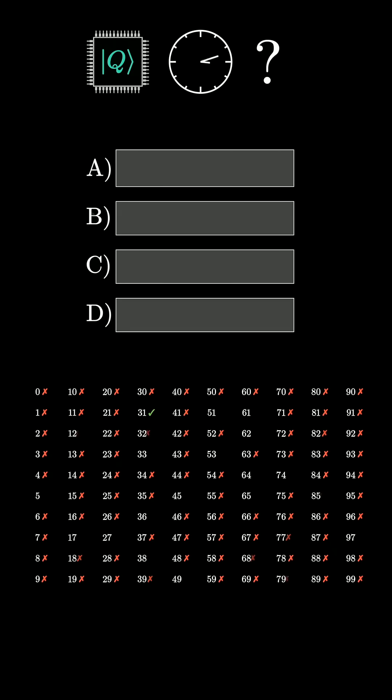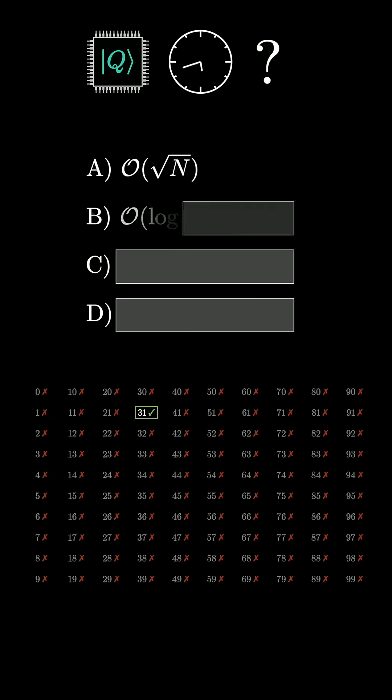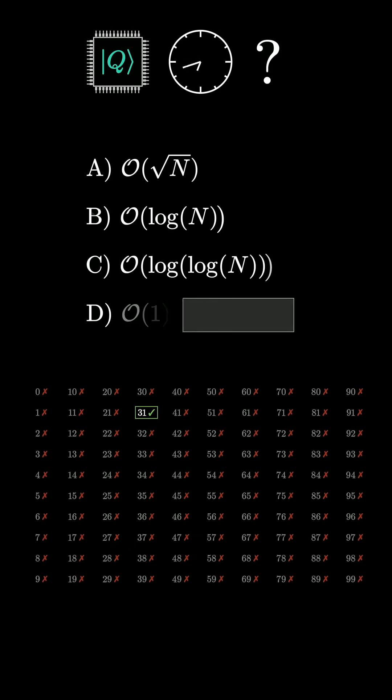For the equivalent version of this question, but on a quantum computer, where you're given a function that is in a certain sense triggered by one unique value out of the first n numbers, how many times would you have to use this mystery function to be able to find that mystery value?